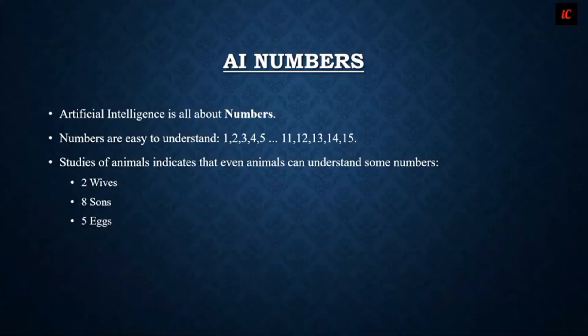Hello everyone, welcome back to indiancoding.com. Today we are going to study about AI numbers. Artificial intelligence is all about numbers. Numbers are easy to understand like 1, 2, 3, 4, 5, 6, and all these.